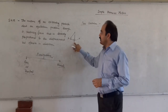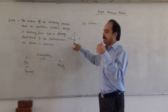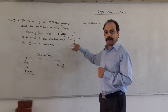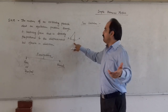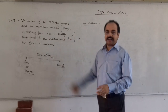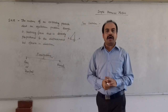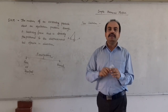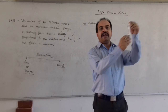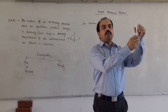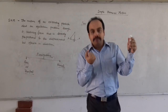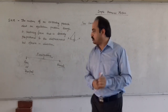Again, defining simple harmonic motion: it is the motion of an oscillating particle about any equilibrium point through a restoring force that is directly proportional to the displacement and in opposite direction. Suppose the body is moving in this direction, then the force will try to bring it back to the equilibrium position.